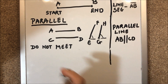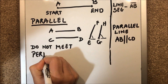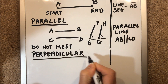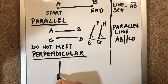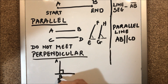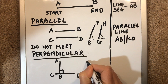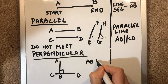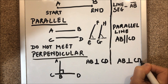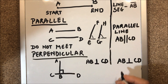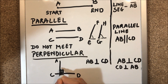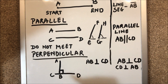Next we have perpendicular lines. Two lines are said to be perpendicular when they meet at a point making a 90-degree angle. So AB and CD — AB is perpendicular to CD. We represent perpendicular lines with a perpendicular symbol. If AB is perpendicular to CD, then CD is also perpendicular to AB, because they meet at an angle of 90 degrees — both lines are perpendicular to each other.